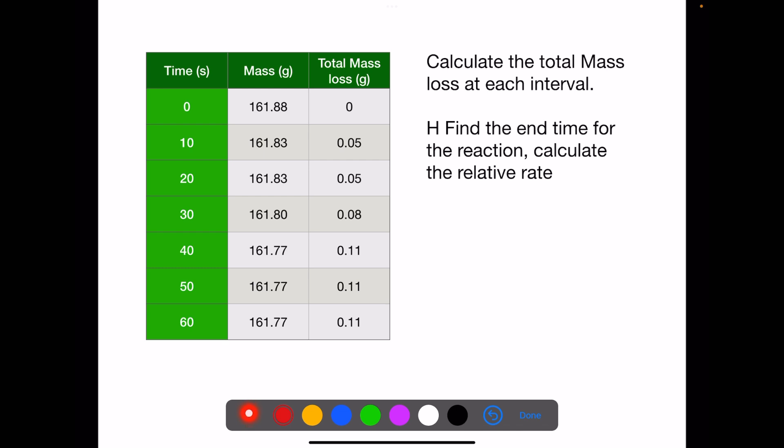For higher, we need to find the end time for the reaction, which is 40 seconds. And we do 1 divided by time, which is 1 divided by 40, so our relative rate is 0.025 per second.